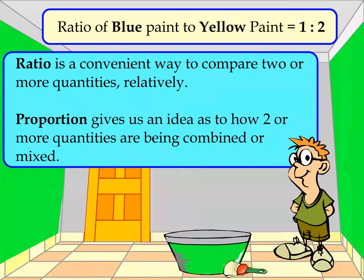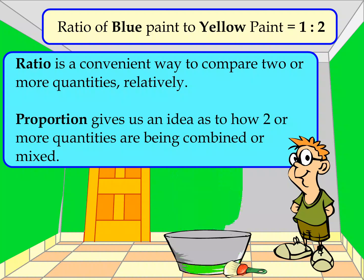The ratio is a convenient way to compare two or more quantities relatively. Proportion gives us an idea as to how two or more quantities are being combined or mixed.